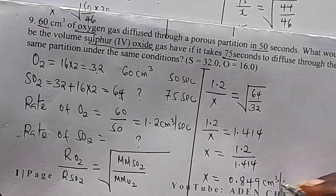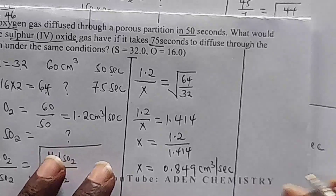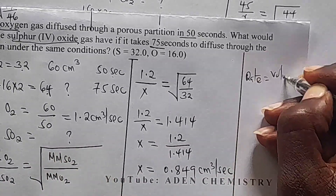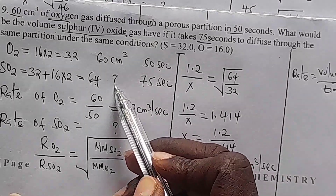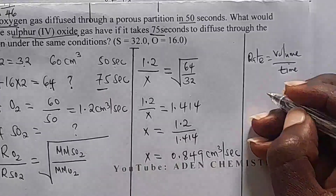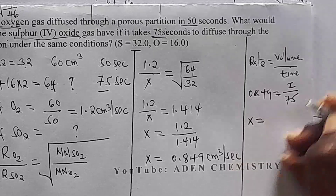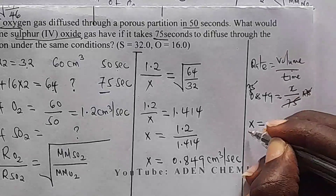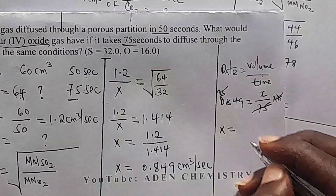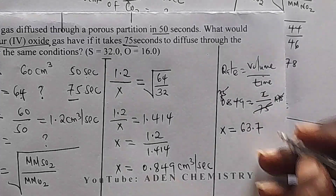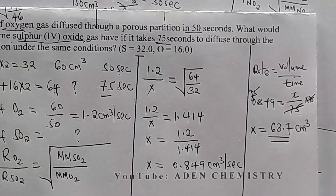Now that we have the rate, we can get volume using rate = volume ÷ time. The rate is 0.849 and the time is 75 seconds. So volume = 0.849 × 75 = 63.7 cm³. That is the volume of sulphur dioxide gas. We have successfully found the volume.